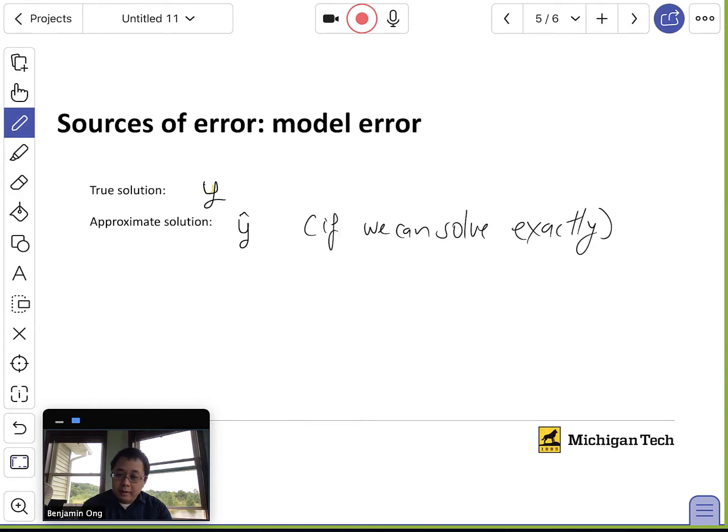Then we can have an estimate for how good our model is by computing the difference between Y and Y hat. So this is often what we call the model error. How much does Y hat deviate from the true unknown solution Y? This is often a very difficult quantity to estimate because we don't know what Y is. It is the role of a modeler to understand how good their equations or their models actually describes the world around them.